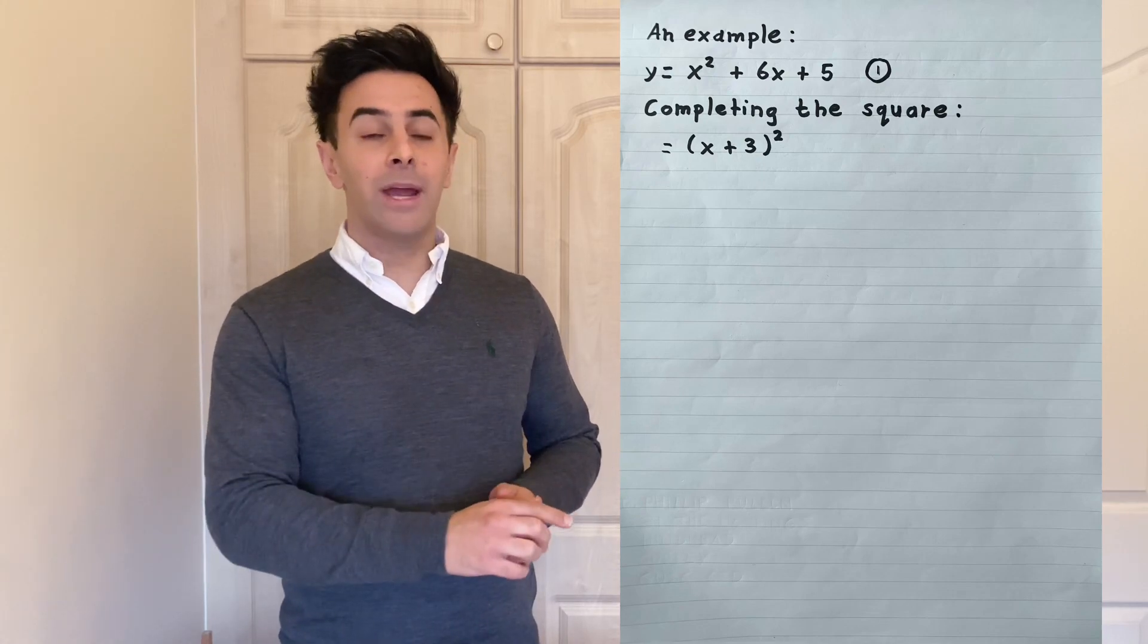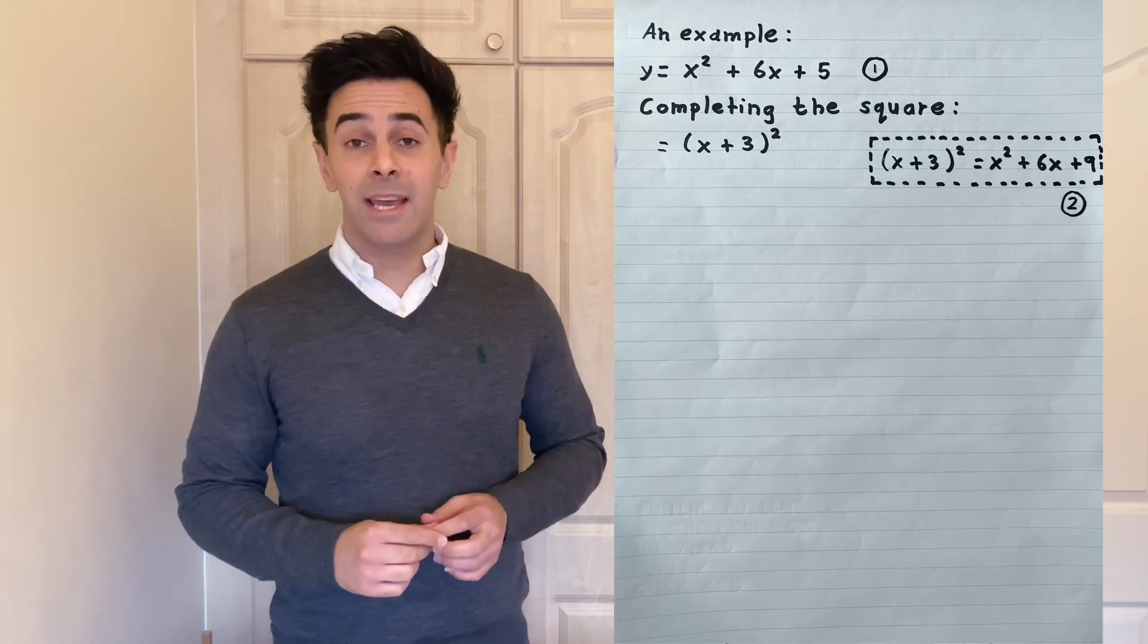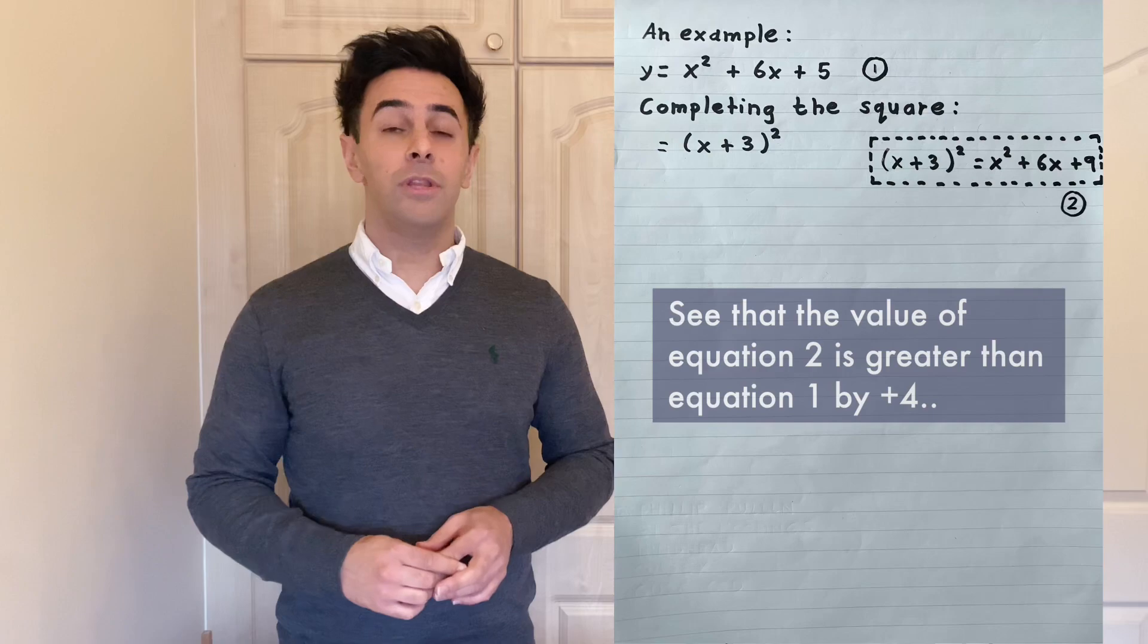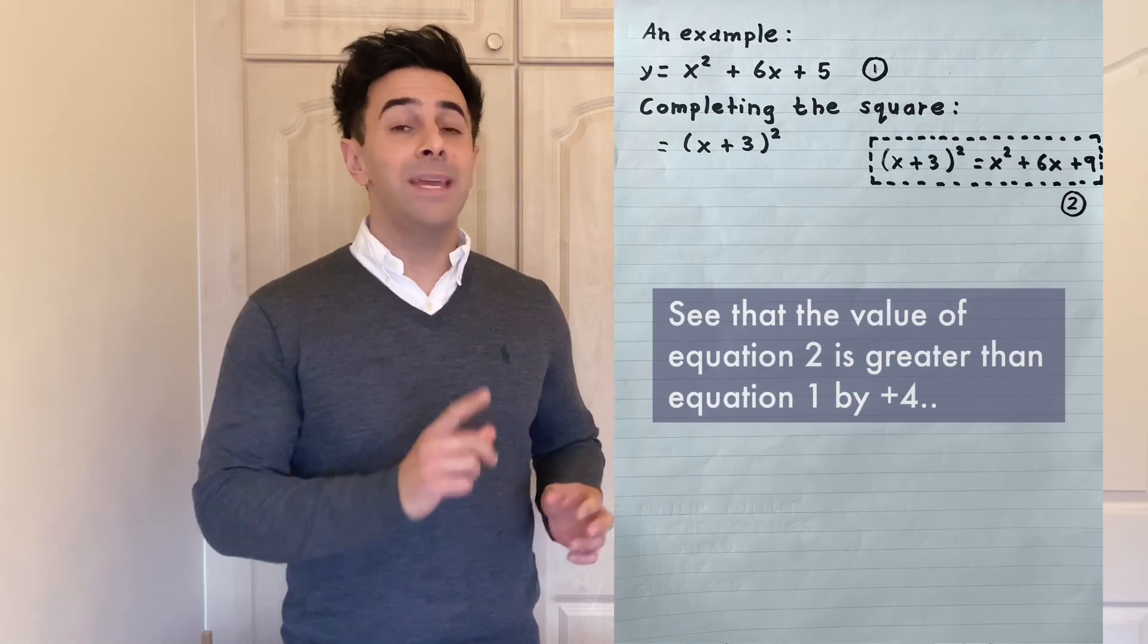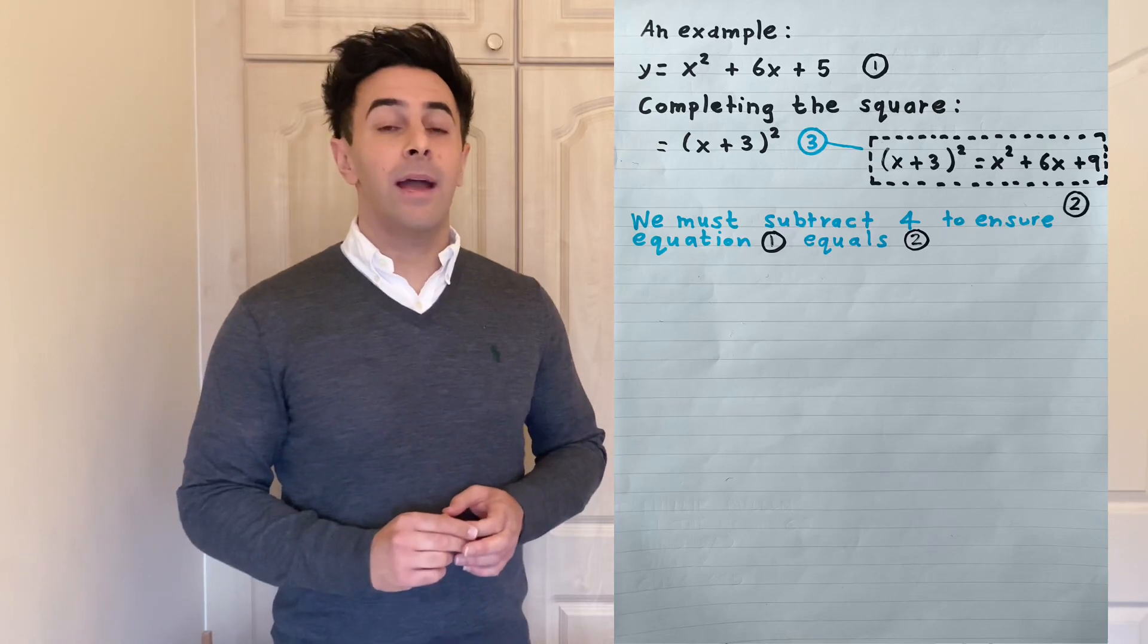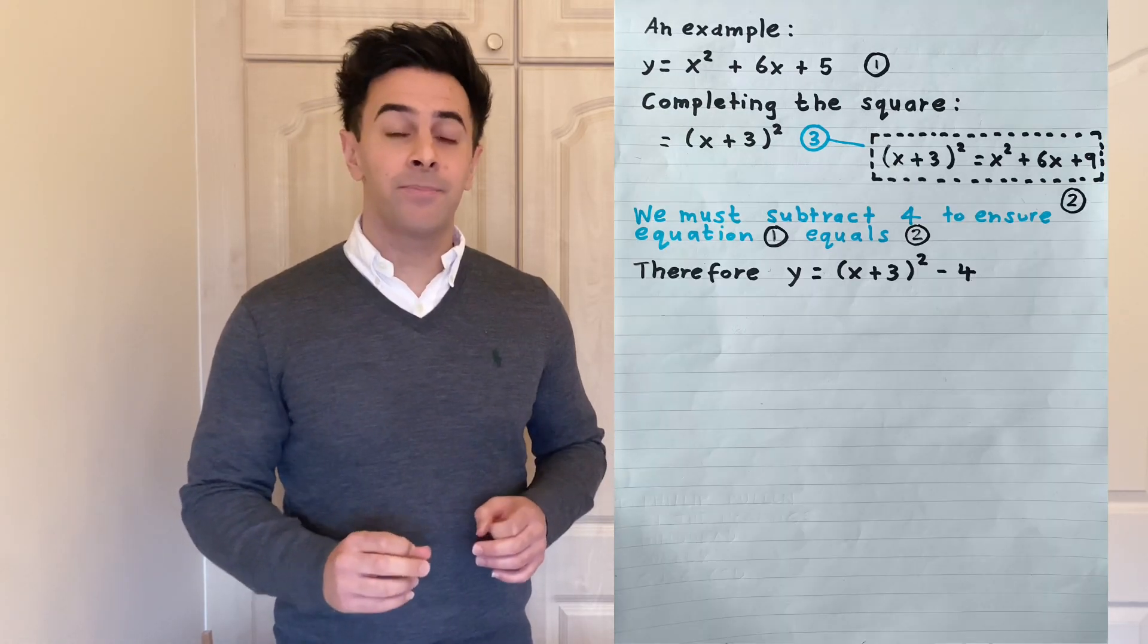If we multiply the brackets out for x plus 3 all squared we get x squared plus 6x plus 9. Now this is 4 more than the original equation. Now to make it equal we have to subtract 4. Therefore our solution here is y equals x plus 3 all squared minus 4.